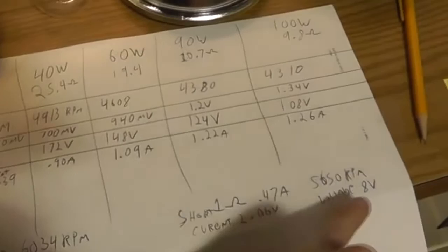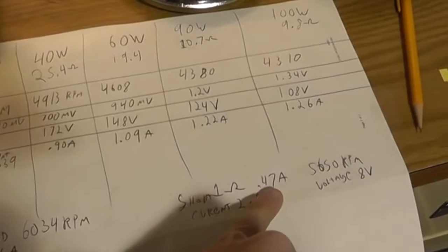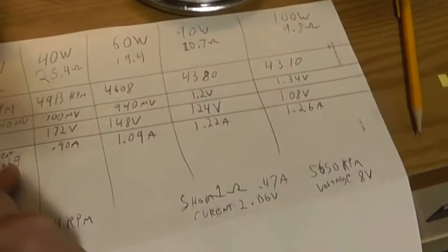At a dead short, you basically have maximum current, minimum voltage, okay, and the input current is about 0.47 amps on the little motor.